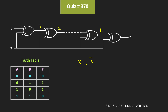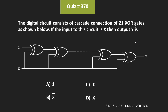The inputs to the last, 21st XOR gate are 1 and X. As we have seen, when the inputs to an XOR gate are 1 and X, the output Y is equal to X̄. Therefore, after 21 XOR gates, the output of this circuit is X̄. Hence, option B is the correct answer.